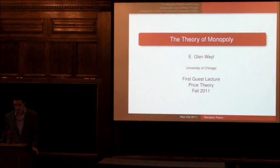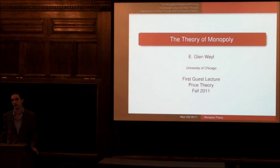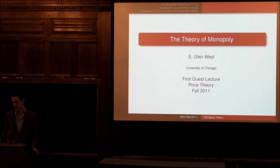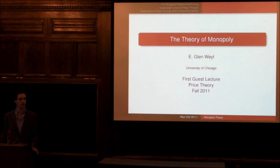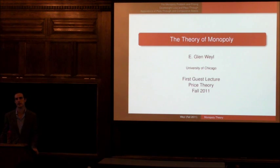Good afternoon, everyone. My name is Glenn Weil, and you can call me Professor Weil, or you can call me Glenn, or you can call me Andy McCain — whatever you can come up with for me. I'm going to be giving three guest lectures in this course. This is the first one. I'll give two others: one covering decision theory, and one covering the choice by monopolists of non-price products, like product quality.